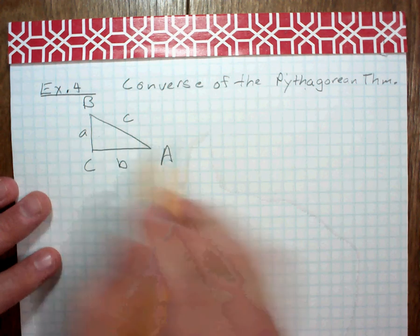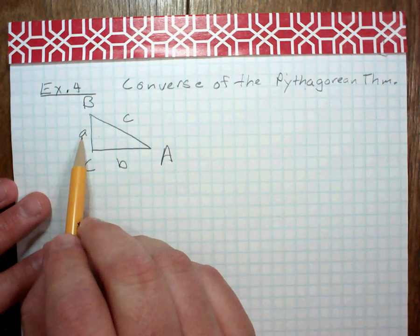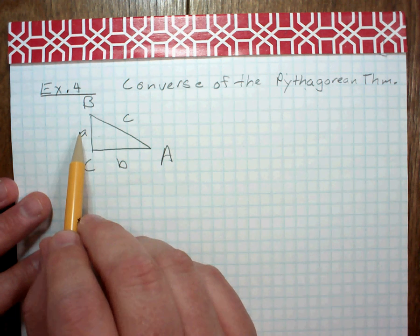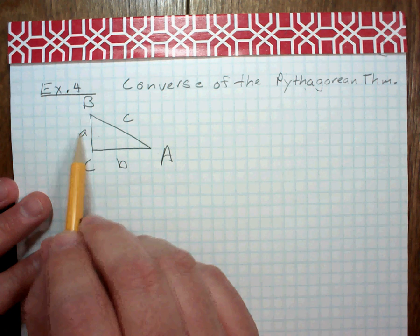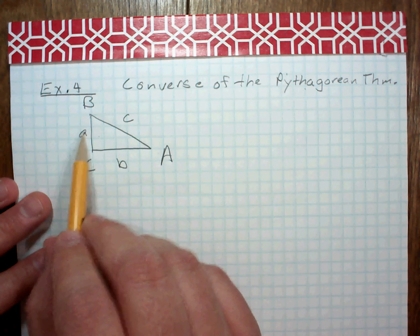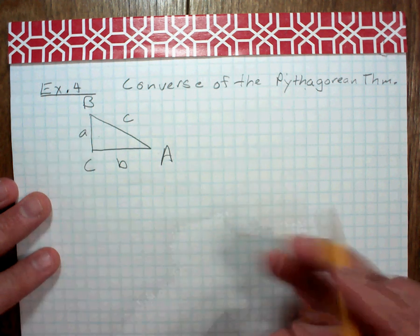So, we're saying that the converse of this is really that if the square of the length of the longest side of a triangle is equal to the sum of the squares of the other two sides, then the triangle is right.